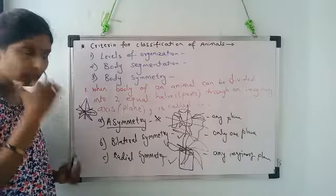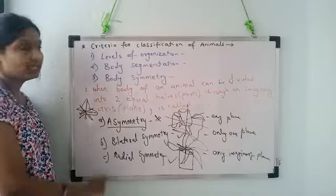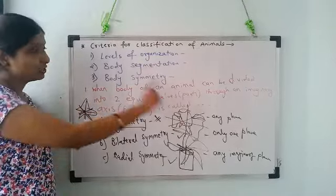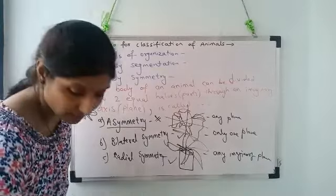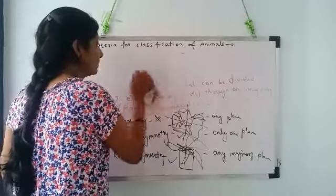Understood? So I hope you understood the three criteria for classifying animals: levels of organization, body segmentation and body symmetry. Now, the fourth one we will study.